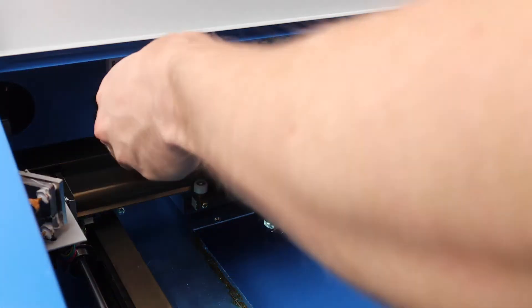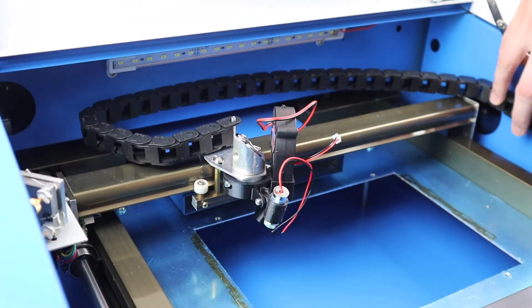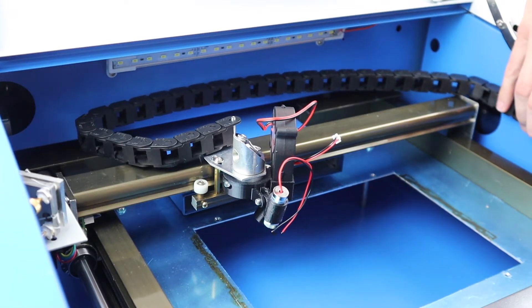Place the end of the drag chain onto the laser cutter head and then measure out the length of the drag chain you need. You want it to be long enough to reach all four corners of your bed, but not too long that it gets in the way.